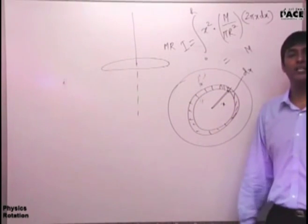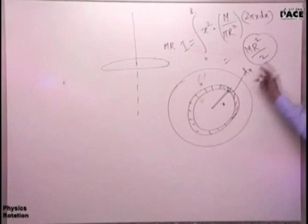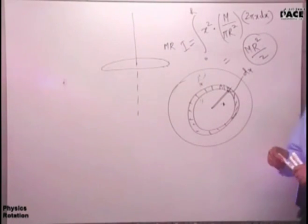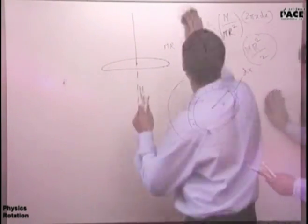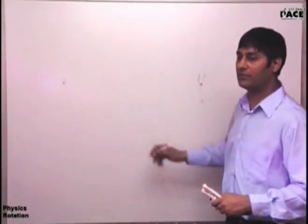Moment of inertia is a vector quantity or scalar quantity? It's a tensor. Moment of inertia - it's a tensor. Very good.